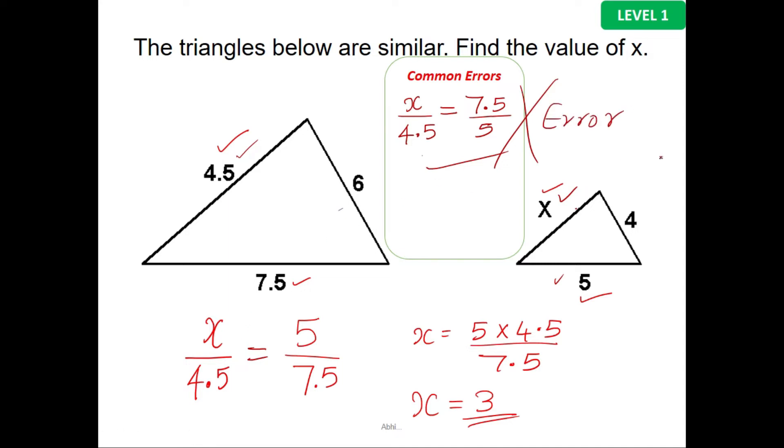Maintain the order. If you start from here, x over 4.5, it should be equal to 5 over 7.5. You come back from here and take the ratio, not like this.